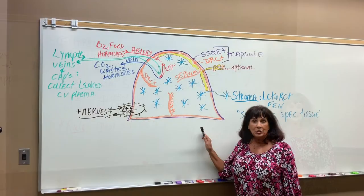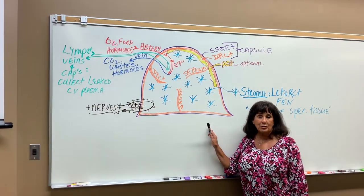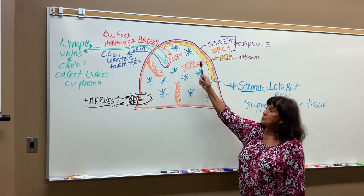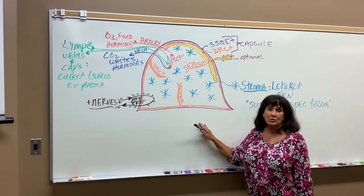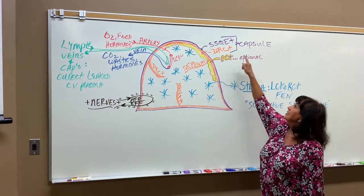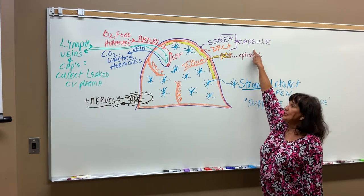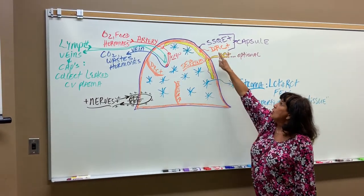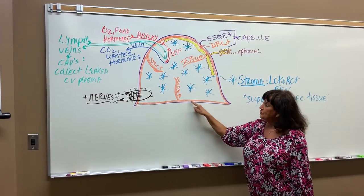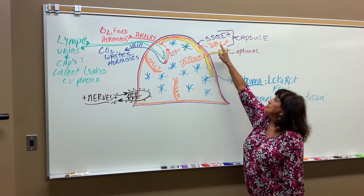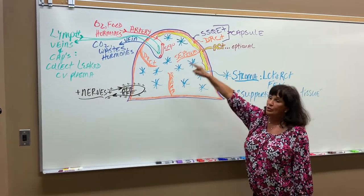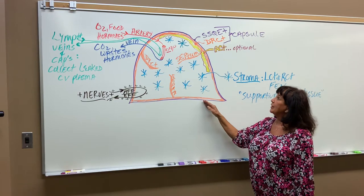Now we're going to go over the drawing of a typical solid organ — I've made it sort of liver-lobe shaped. Around every solid organ, to give it its shape and overall support, is the capsule. The capsule is made out of the purple layer — always simple squamous epithelium — and always dense regular CT underneath for support. Simple squamous plus dense reg equals the capsule that goes around the whole organ.